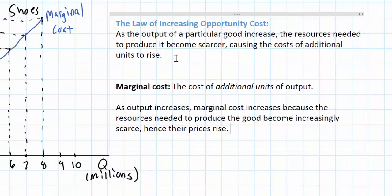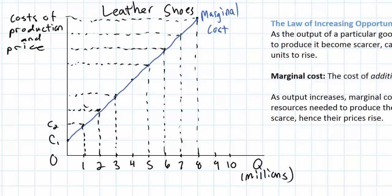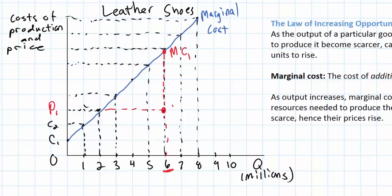Now what does this have to do with the law of supply? Well, you may have noticed that the upward sloping marginal cost curve looks an awful lot like a supply curve. So if we looked at the vertical axis not as the cost of producing leather shoes but as the price of leather shoes, and we put a particular price on here, we can answer the question of why a firm would only be willing to provide a certain quantity at a particular price. Let's put the price of P1 on our graph. Would producers be willing to provide, say, 6 million leather shoes? At a quantity of 6 million and a price of P1, the cost of producing 6 million shoes — the marginal cost, MC1 — is much higher than the price of P1.